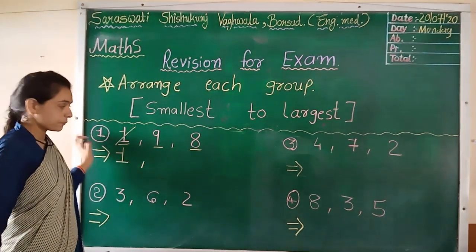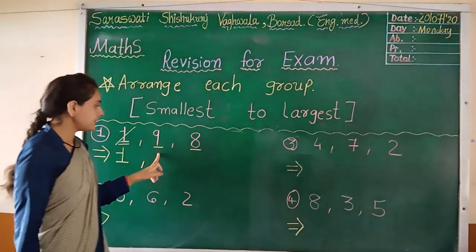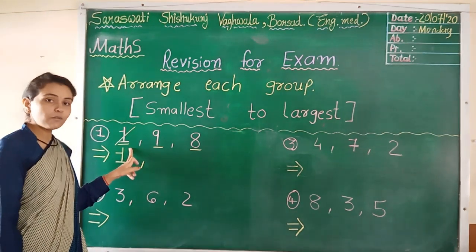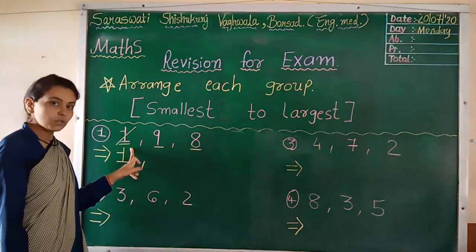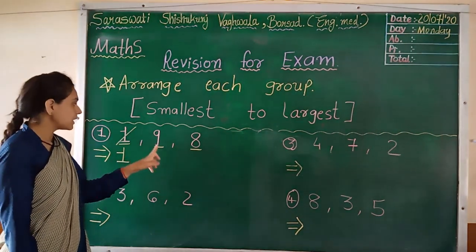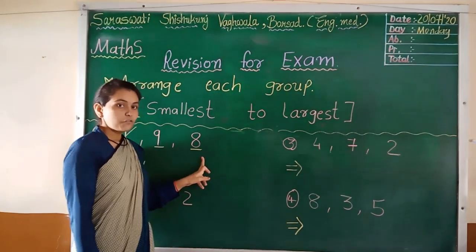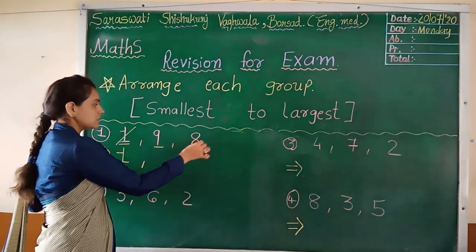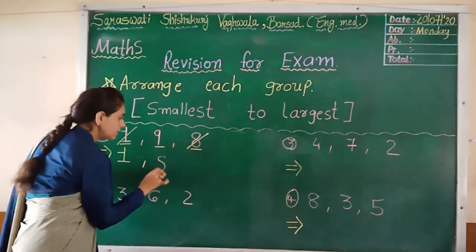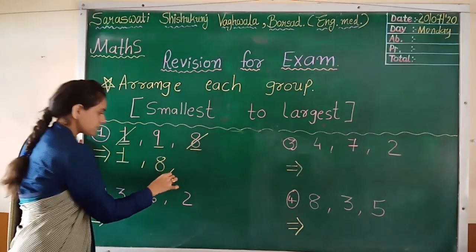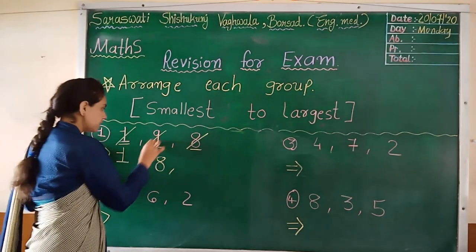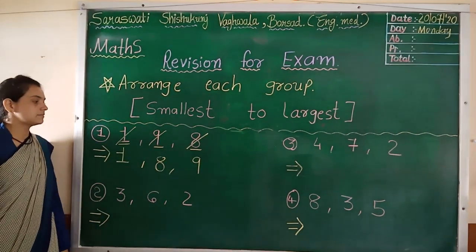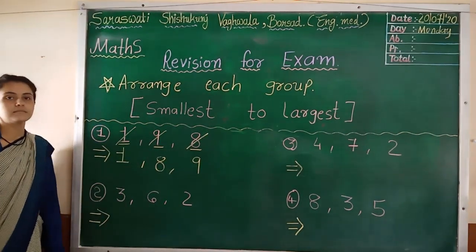Then look at the remaining: nine and eight. Whichever number you have already placed, you do not have to see again. Nine and eight. Which is the smallest number? Eight. So, cut eight and place it here. And last, nine. So, you have to write nine here.